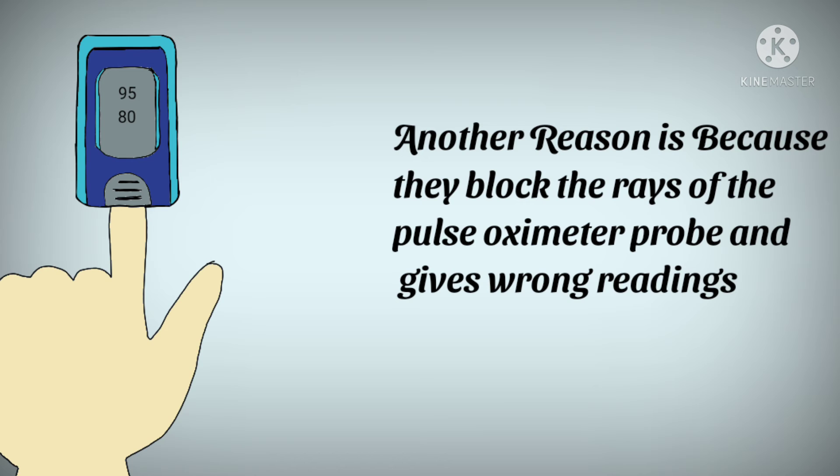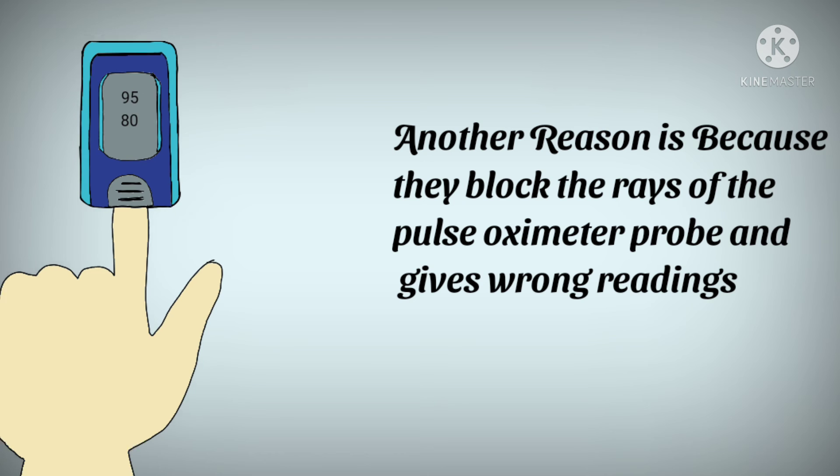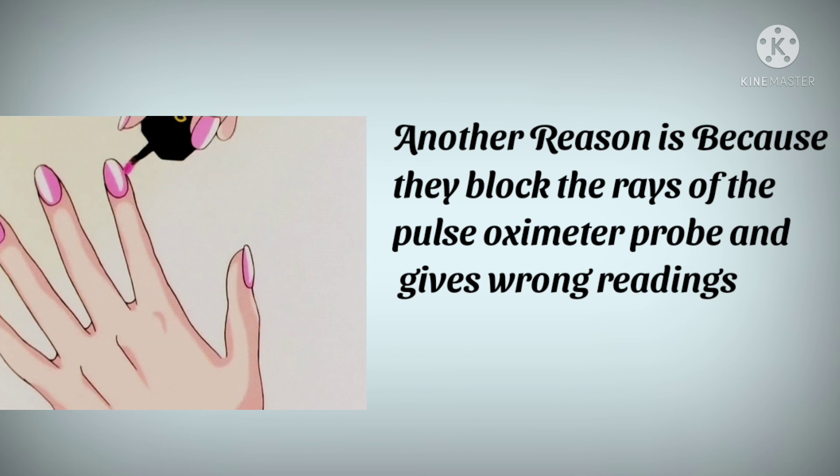Another reason nail paints are removed is they block the rays of the pulse oximeter probe from passing through the nails to measure oxygen saturation. The paint creates a layer which prevents light from entering the nail bed.